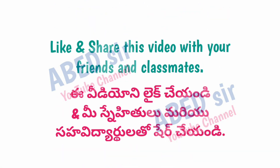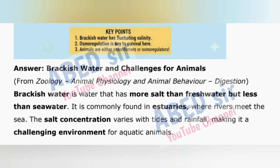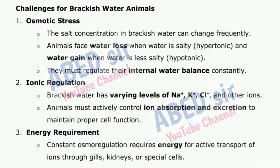Next important long question 5: Define brackish water and outline the challenges brackish water animals face in terms of water and ionic regulation. Brackish water is water that has more salt than fresh water but less than seawater. It is commonly found in estuaries where rivers meet the sea. The salt concentration varies with tides and rainfall, making it a challenging environment for aquatic animals. Challenges for brackish water animals: 1. Osmotic stress — the salt concentration in brackish water can change frequently. Animals face water loss when water is salty (hypertonic) and water gain when water is less salty. They must regulate their internal water balance constantly.